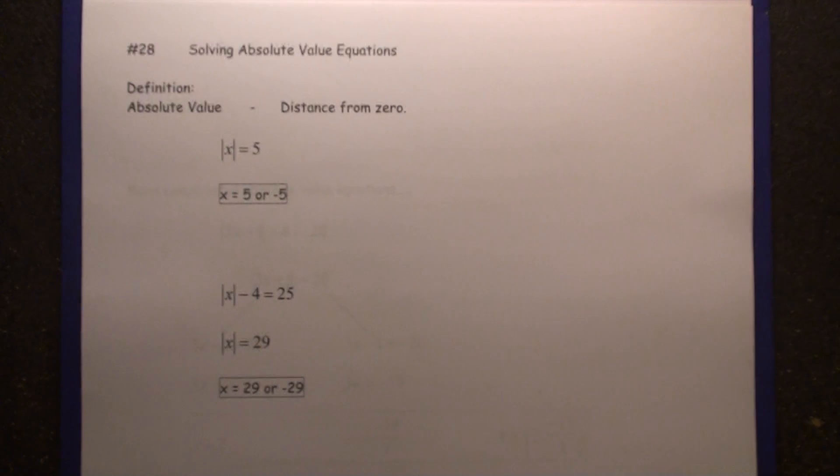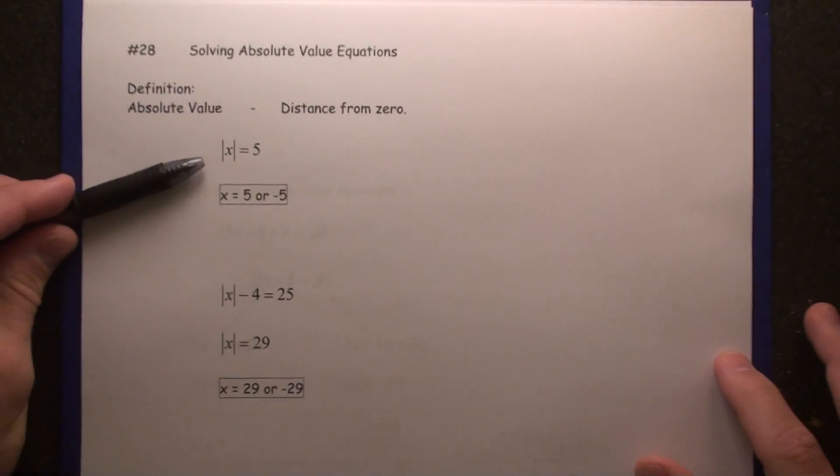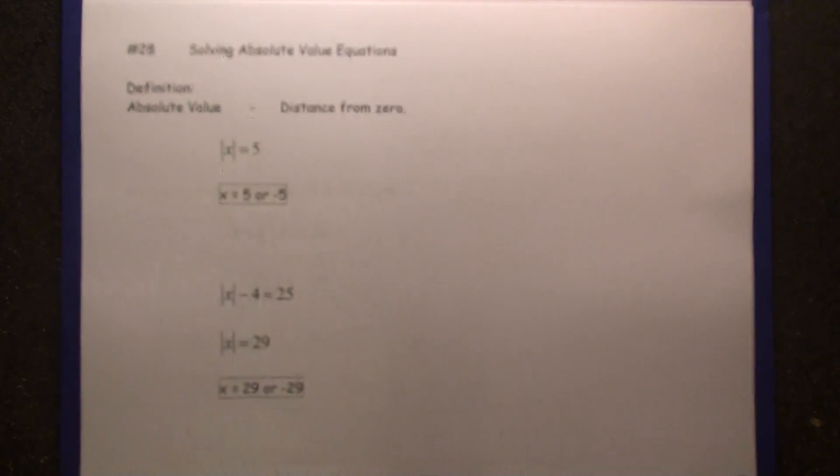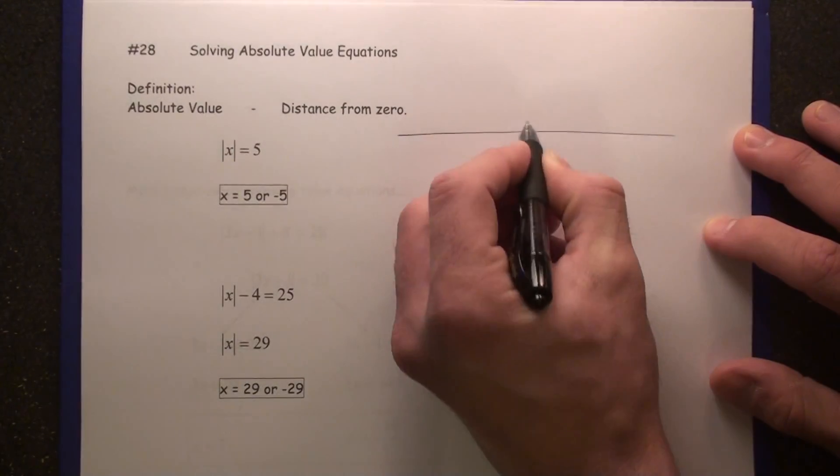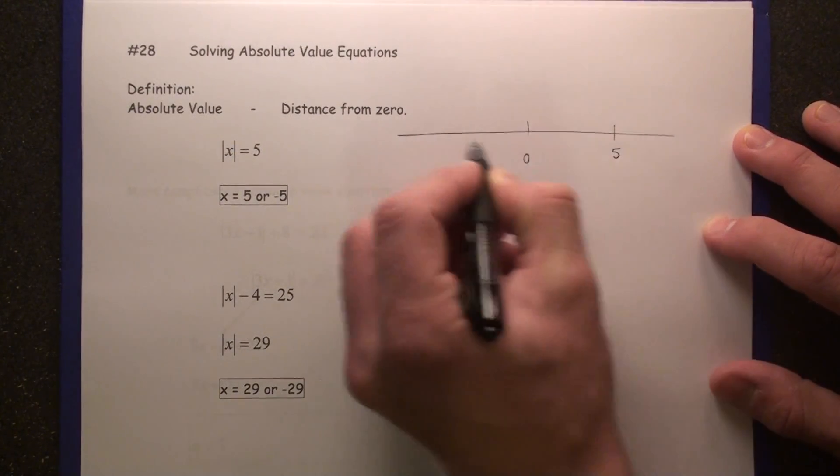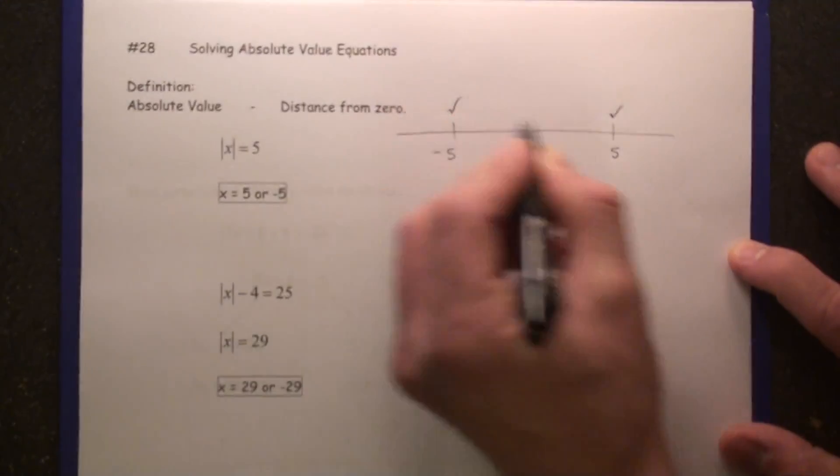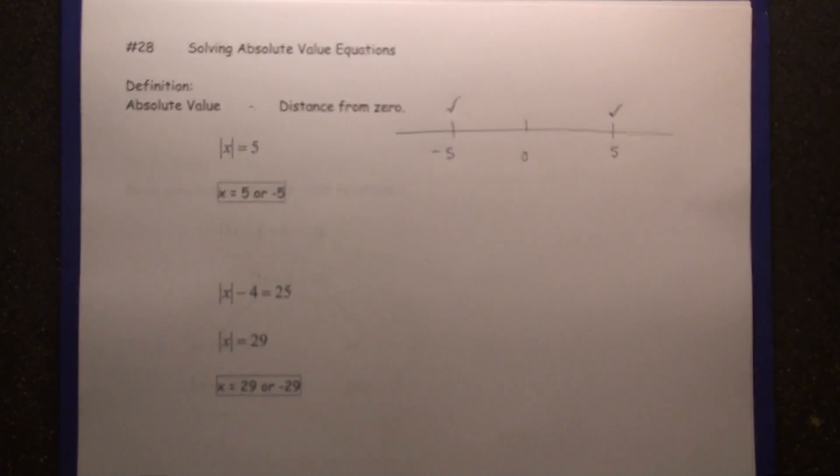If you take a look at the equation, the absolute value of x equals 5, there are two answers. One is 5, the other is negative 5. Why? Because if this is zero, both of these positions are 5 away from zero. That's why the answer is 5 or negative 5.